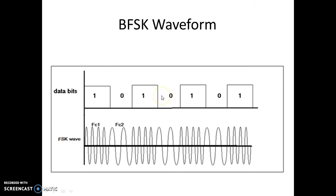These are the waveforms of BFSK. For symbol one, we have a high frequency f_c1; for symbol zero, we have a low frequency f_c2. There is no rule that one must be of higher frequency and zero of lower frequency. The two frequencies f_1 and f_2 must be distinguishable from each other, and these frequencies should be integral multiples of a particular frequency.